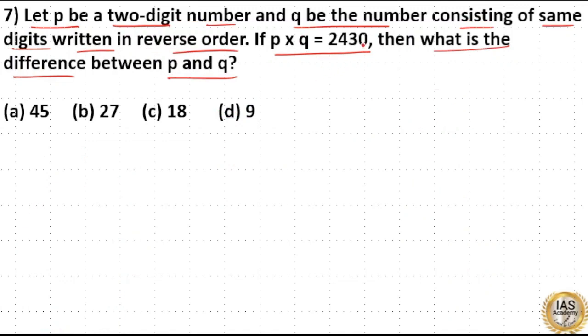Let's do this question in a different method as well. Here, 0 is in the unit place. That means the unit place of P or Q is 5.